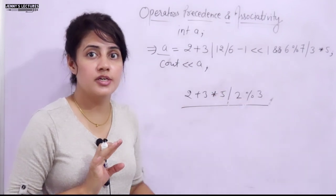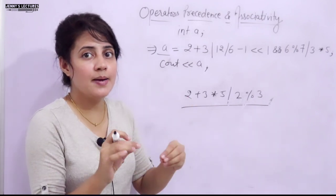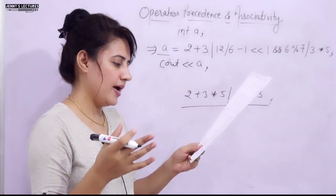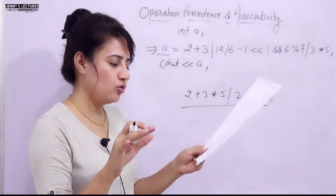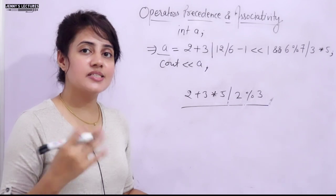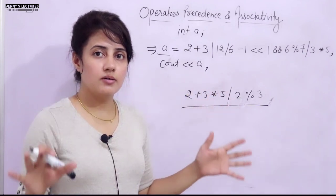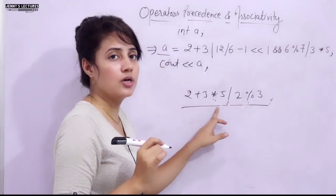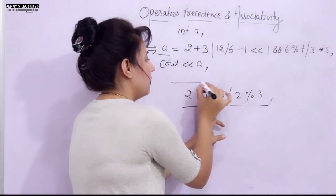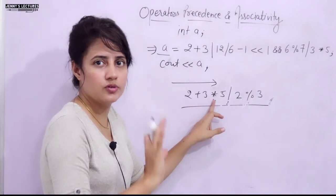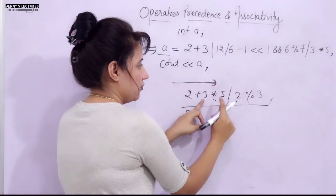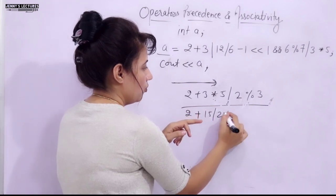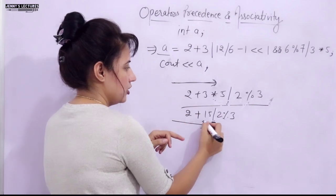In the precedence table, associativity is shown for each group. Most operators have left-to-right associativity except two groups: prefix increment/decrement, unary plus/minus, logical NOT, bitwise NOT, address-of, and sizeof — these are right-to-left. Conditional and assignment operators are also right-to-left. For multiplicative operators, associativity is left to right, so moving left to right: the first operator is multiply (3 * 5 = 15), then divide (15 / 2 = 7 for integer), then modulo (7 % 3 = 1), then plus (2 + 1 = 3). The output is 3.